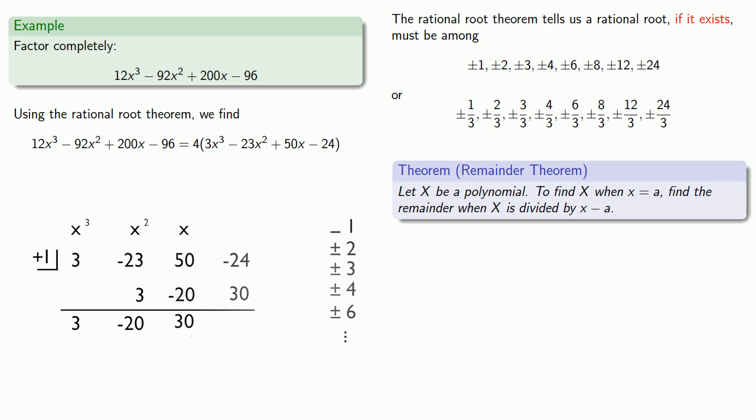At this point, there is a useful shortcut. Since we're looking for a root, we want the remainder to be 0. If the remainder isn't 0, we don't care what it actually is. And here the remainder is not 0. So positive 1 is not a root.